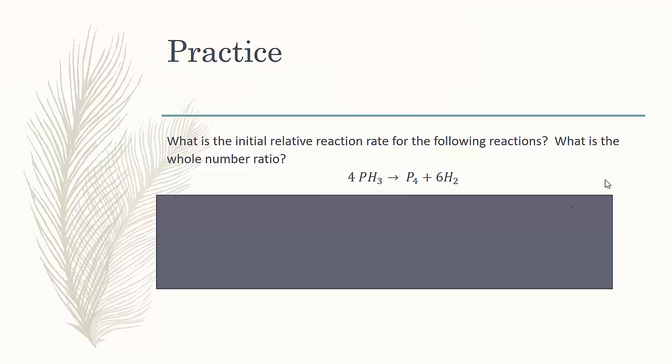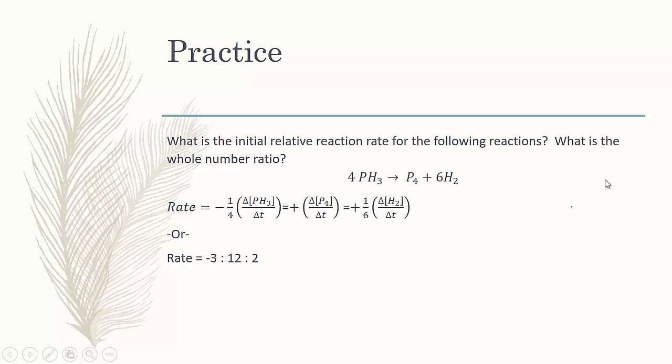Hopefully, you were able to get, that would be a negative 1 fourth, to 1, to a positive 1 sixth. To express it as a whole number ratio, we can multiply the entire equation by 12. If I multiply by 12, 4 becomes 3, 1 is 12, and 6 becomes 2. So, our relative rates to one another are a negative 3 to 12 to 2.